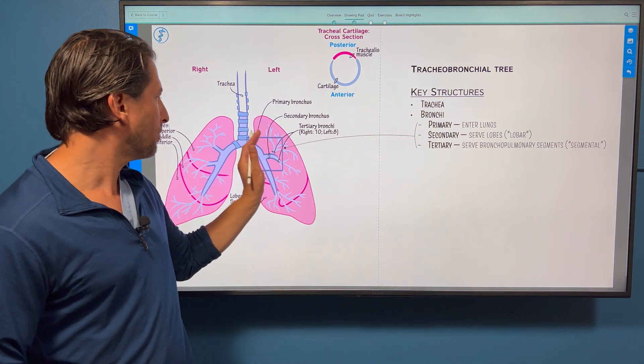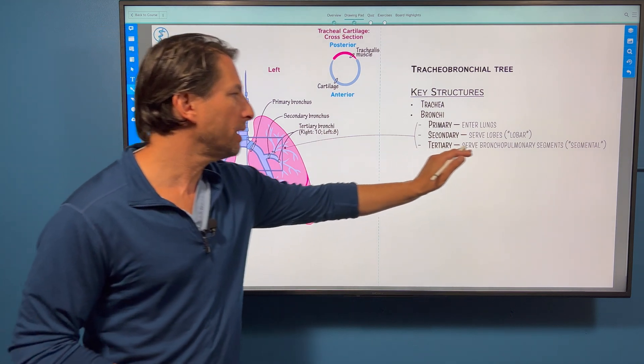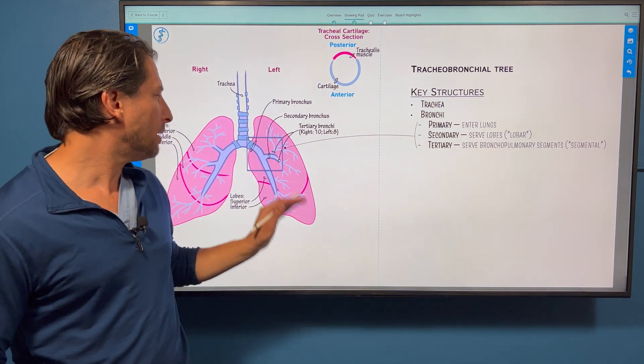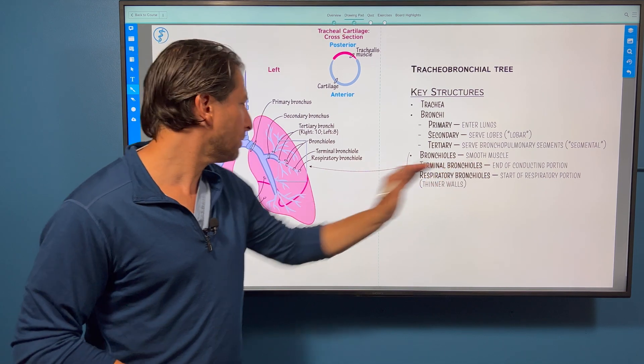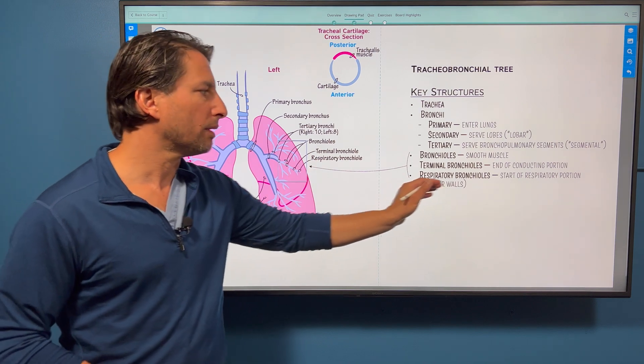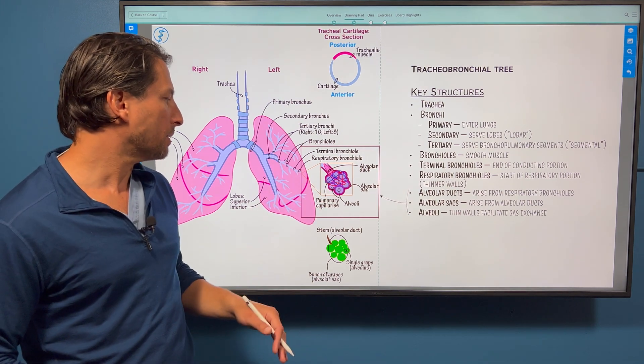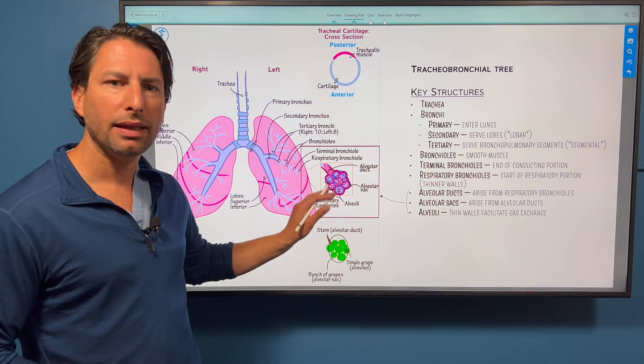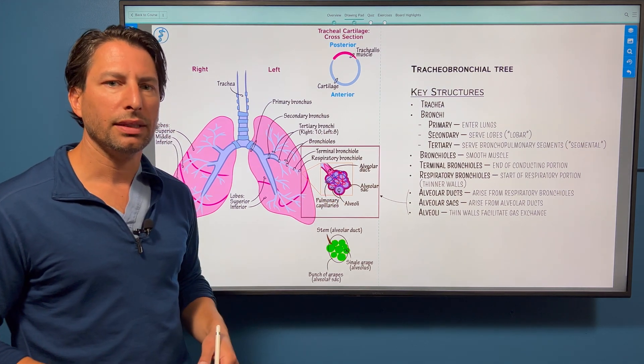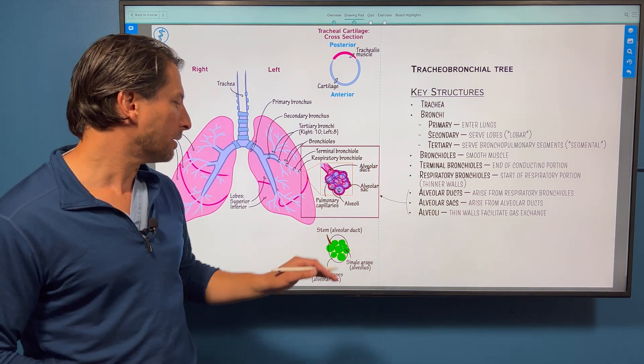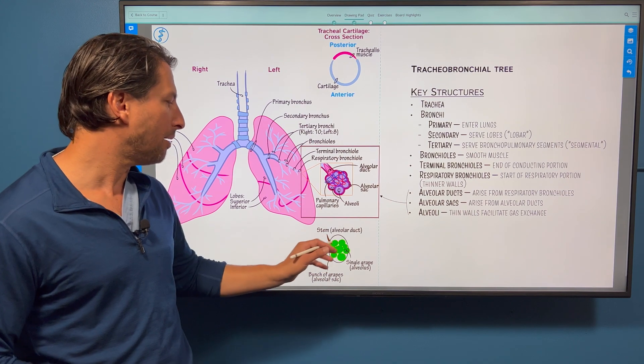Jumping into the bronchi, here's the primary bronchus. It enters the lungs. A secondary serves the lobes, so often called lobar. Tertiary serves the bronchopulmonary segments, so it's called segmental. And then the bronchioles, lined with smooth muscle. Terminal bronchioles end this conducting portion here. Then we jump into the respiratory bronchioles. They have thinner walls and they start the respiratory portion of the respiratory system. They have these alveolar ducts and then the alveoli surrounded by this alveolar sac. Here we show pulmonary capillaries to reinforce the idea that there's gas exchange happening within the lungs. We compare it to a bunch of grapes as the alveolar sac. A single grape is an alveolus, and then the stem is this alveolar duct.